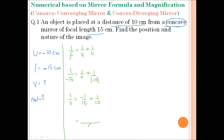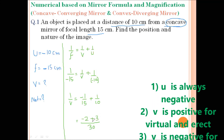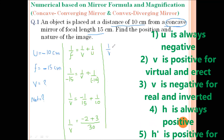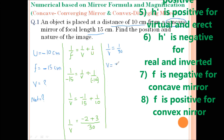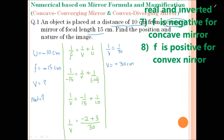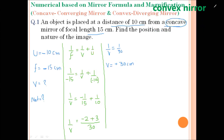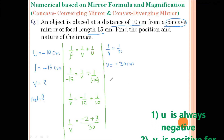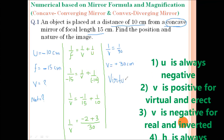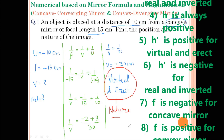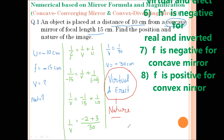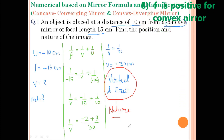So 1/V = 1/30, and therefore V = +30 cm. The position of the image is 30 cm from the pole of the spherical mirror. The nature of the image formed is virtual and erect, since the sign of V is positive, and according to sign conventions a positive image distance denotes a virtual and erect image.